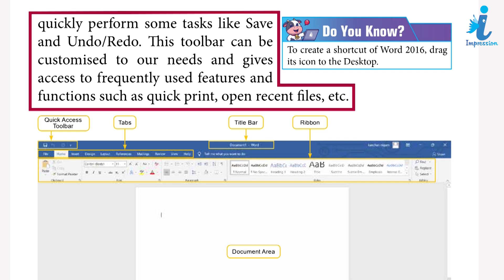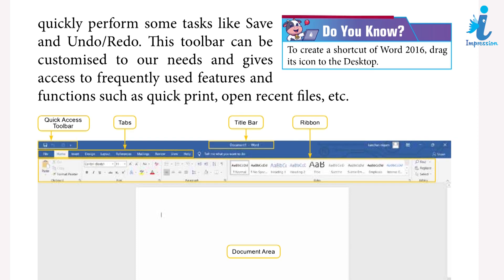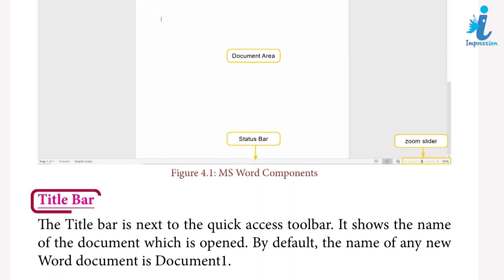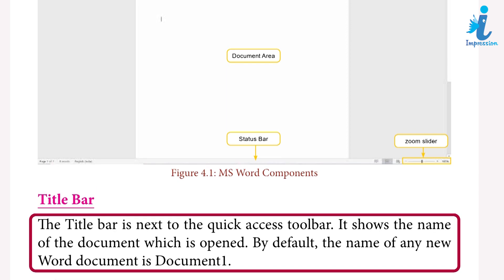Do you know how to create a shortcut of Word 2016? Drag its icon to the desktop. The title bar is next to the Quick Access Toolbar. It shows the name of the document currently opened. By default, the name of any new Word document is Document 1.